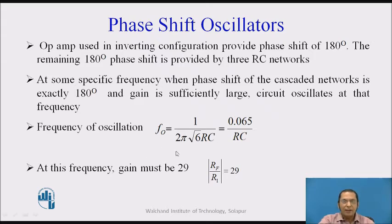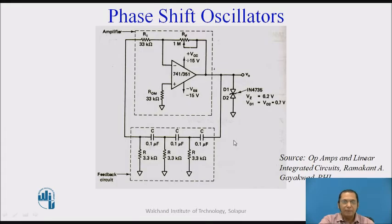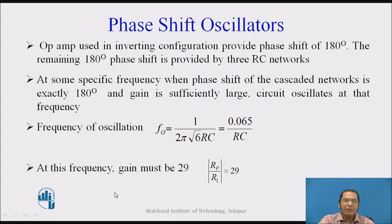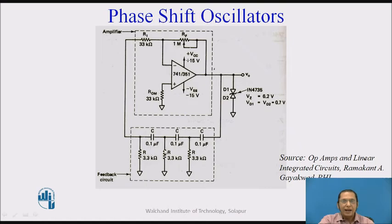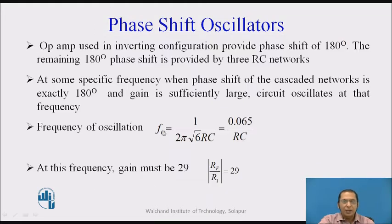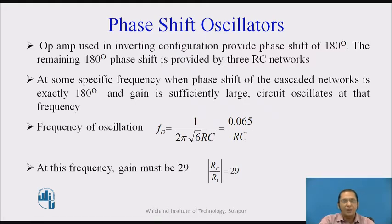The frequency of oscillation of this oscillator is given by F₀ = 1 / (2π√6 · RC), which simplifies to F₀ = 0.065 / RC, where R and C are the values of the resistor and capacitor. The gain required at the frequency at which oscillation starts is equal to 29. Since this is an inverting amplifier, the gain is given by −Rf/R1. The gain of the amplifier must be equal to 29, so Rf/R1 must equal 29 to have a stable waveform at the output of the oscillator.